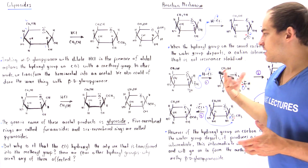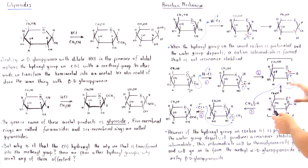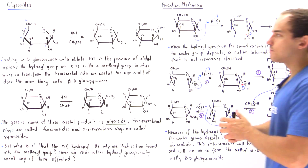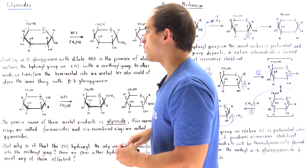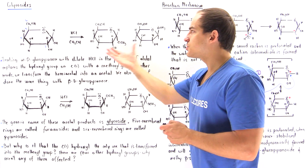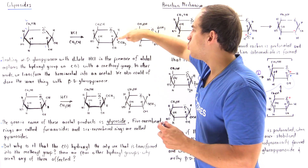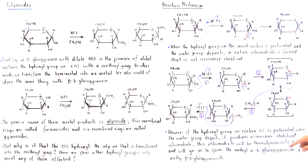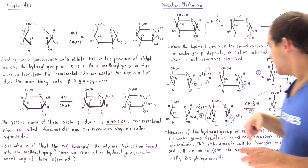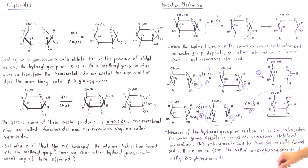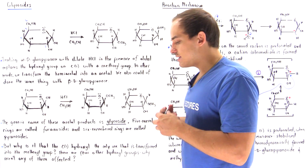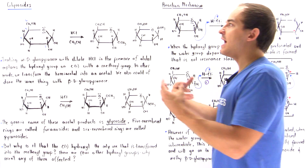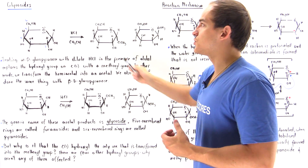We form two types of products because the alcohol can attack the carbocation intermediate from the top or from the bottom. Whether we start with alpha or beta D-glucopyranose, in both cases we produce a mixture of products where the OCH3 group points either to the bottom or to the top side. The product with the group pointing in one direction is known as methyl alpha D-glucopyranoside, and the other is methyl beta D-glucopyranoside. This is the formation of our acetal group from the hemiacetal, where the acetal is known as the glycoside.